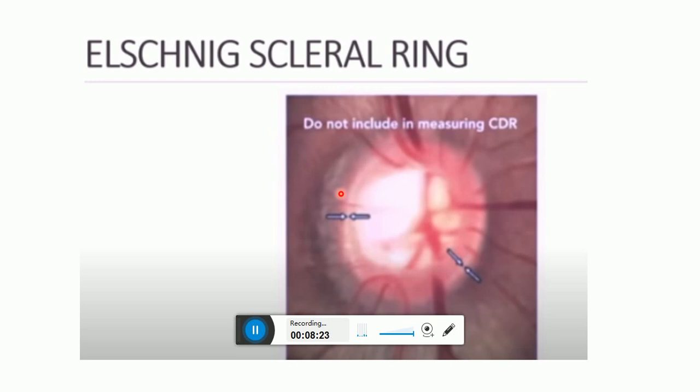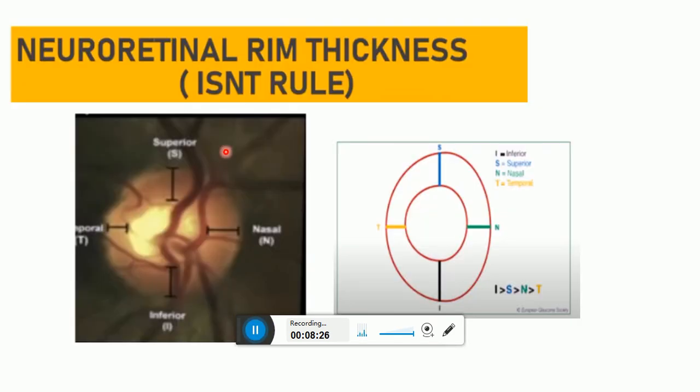This is known as the scleral ring. The neuroretinal rim size is determined by double bending of the vessels and by pallor. Apply the ISNT rule. The cup to disc ratio is estimated by assigning a value of 1 to the disc in any meridian and proportionally estimating the cup size in the same meridian. An alternate method is to calculate the neuroretinal rim width in each sector as a decimal relative to the optic disc size and then subtract from one.